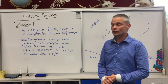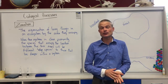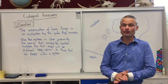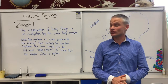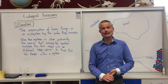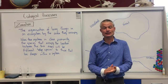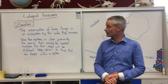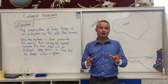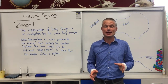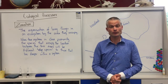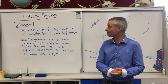So I'm going to go through some of the ecological processes that help inform a permaculture design, and there are three of them: zonation, succession, and stratification. I'll go through each one and just describe what those ecological processes are and how they can help inform what we do in a permaculture design.